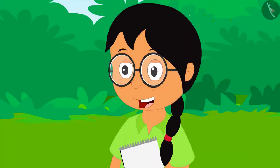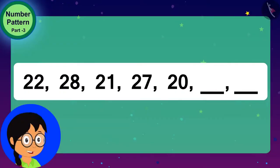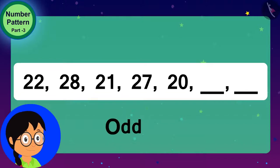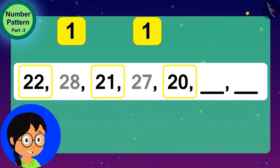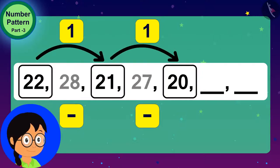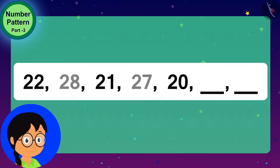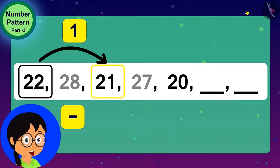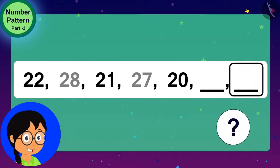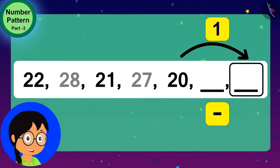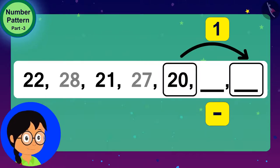Meenu excitedly said, I have found another rule of this number pattern. If you look at the numbers written at odd places of this number pattern, you will find that the numbers written at these places are 1 less than the numbers coming before them. 1 is subtracted as the number written in the first place is 22 and the number written in the third place is 1 less than that, 21. So, what do we have to do to get the number written in the seventh place? Meenu asked the audience. That's correct! 1 has to be subtracted from 20. In this way, the number of the seventh place will be 19.